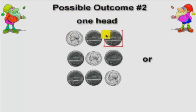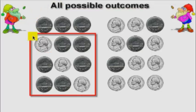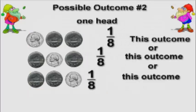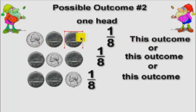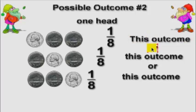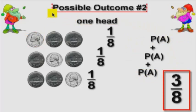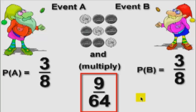Possible outcome number two is they can each get one head — it could be this combination, or this one, or that one. There are three ways to get one head out of a total eight. Each individual arrangement is one out of eight, and when you hear the word 'or,' that means you add up those probabilities, giving three out of eight. We want P of A and P of B, so we multiply them, giving nine out of sixty-four for outcome two.